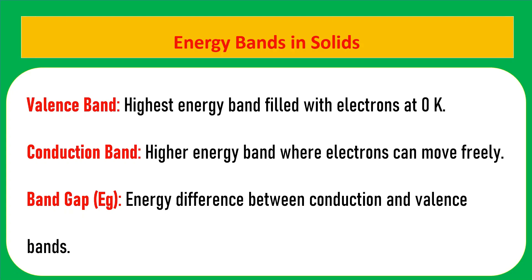We are familiar with the terms valence band, conduction band, and band gap. The band gap is the energy difference between the valence band and conduction band, and it varies for different materials such as silicon and germanium. The valence band is the highest energy band filled with electrons at zero kelvin; the conduction band is the higher energy band where electrons can move freely.